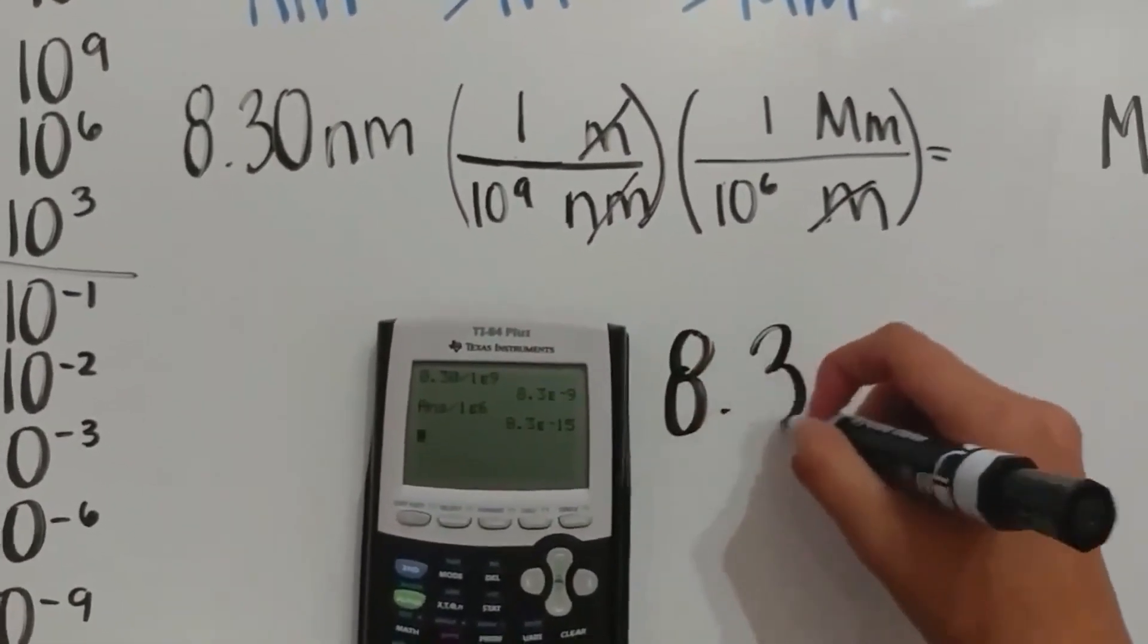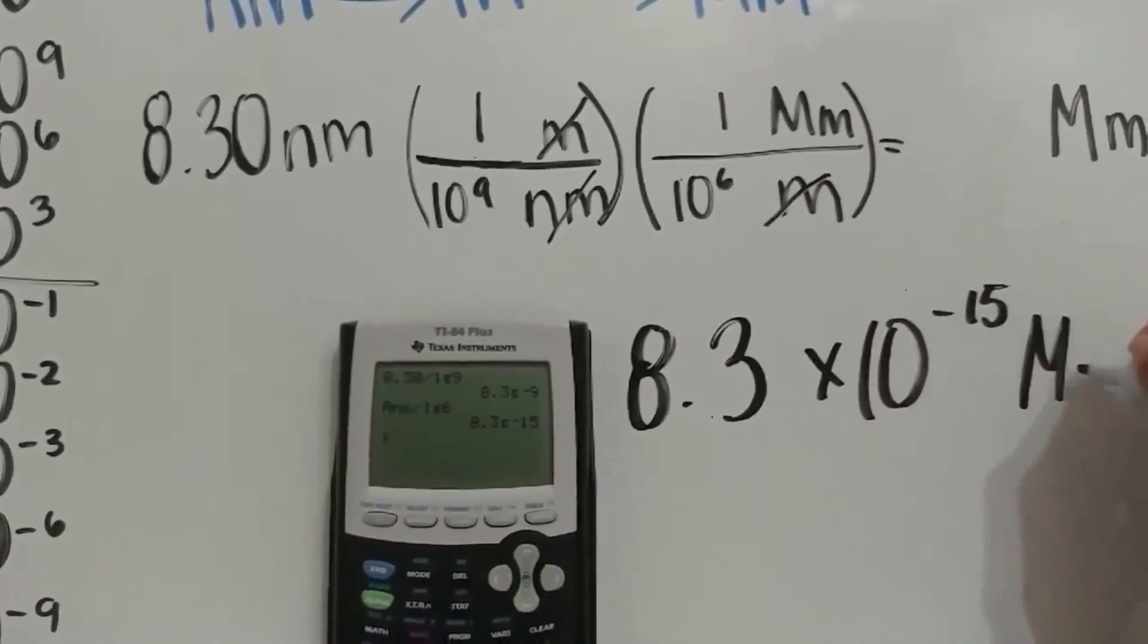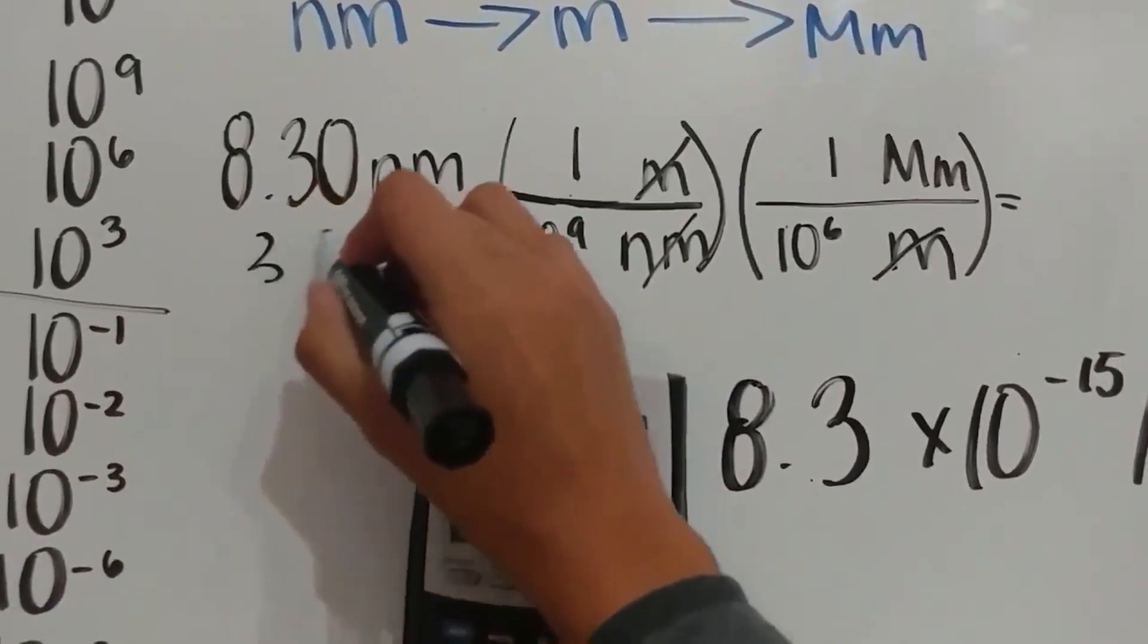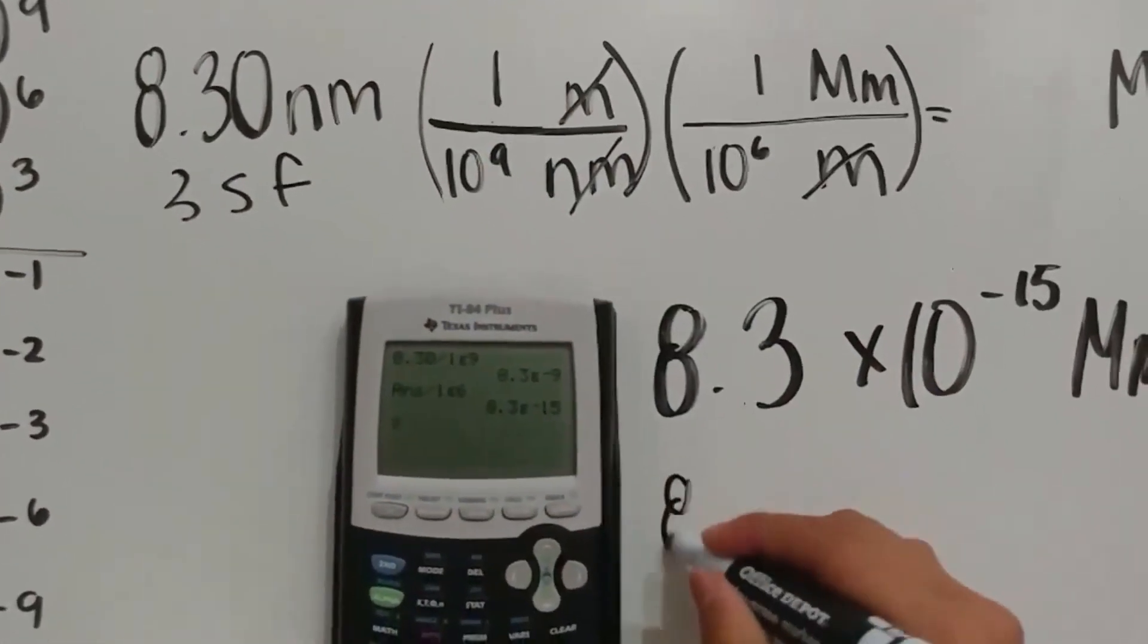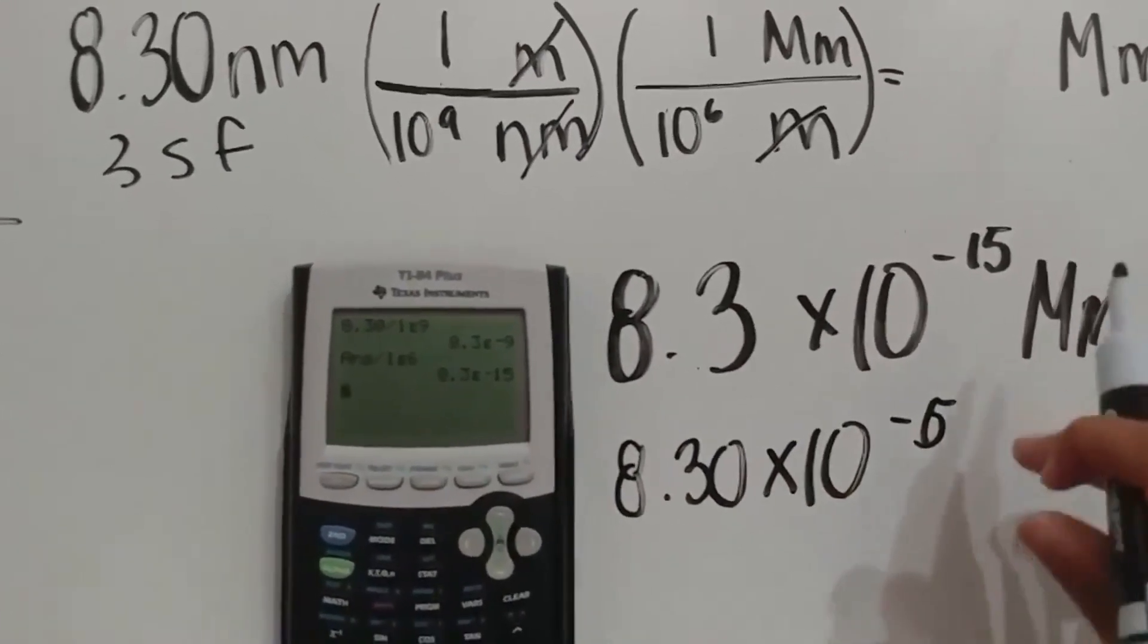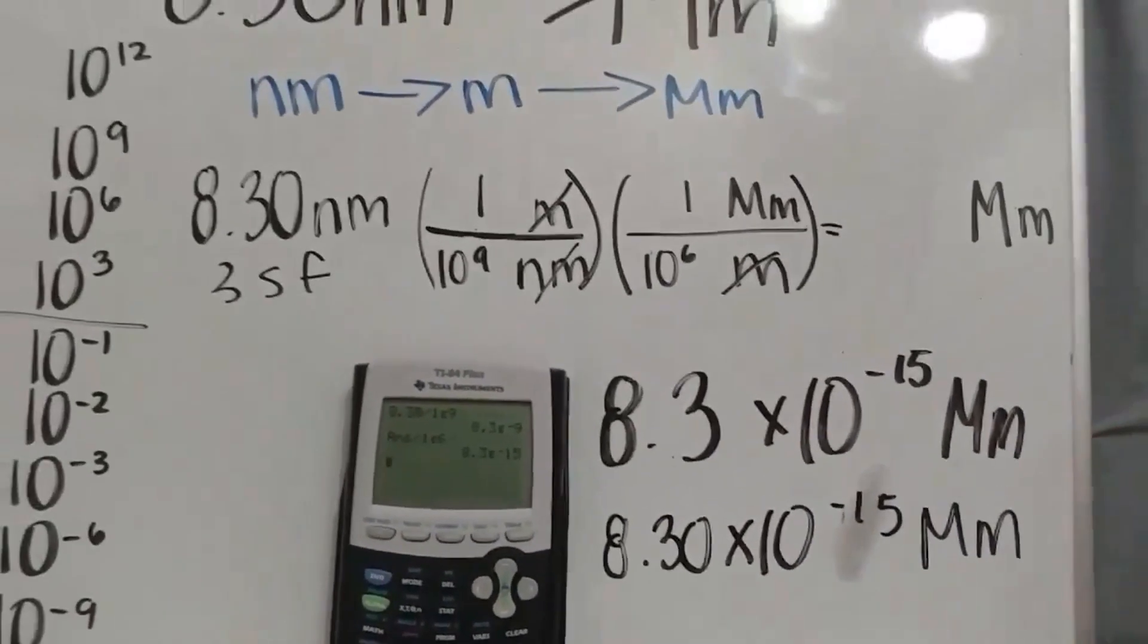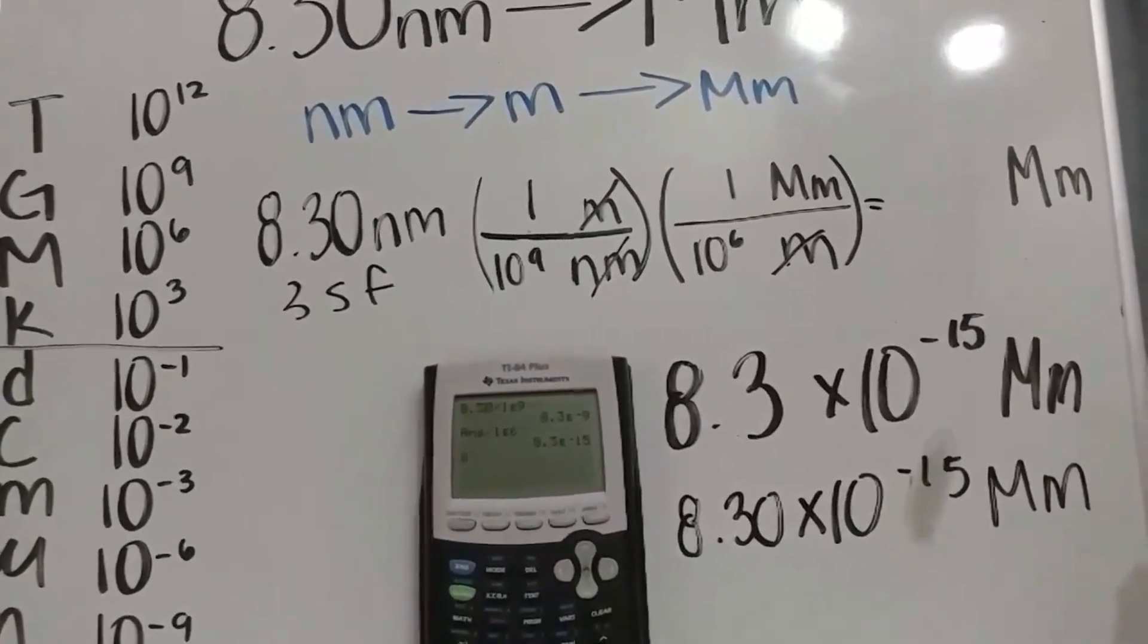So, let me just write that down, 10 to the negative 15 megameters. However, don't forget your significant figures. We have started with 3 significant figures here, so we need to end with 3 significant figures. So, this would be 8.30 times 10 to the negative 15 megameters. And that is how you convert from nanometers to megameters by using the unit prefixes chart.